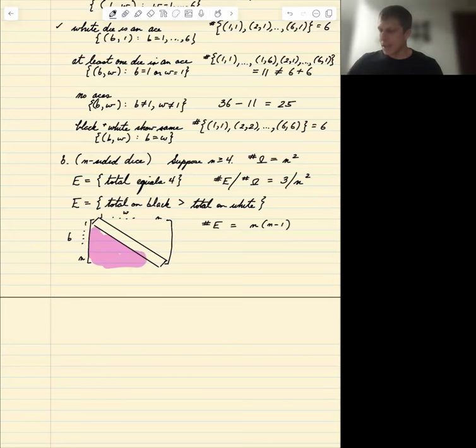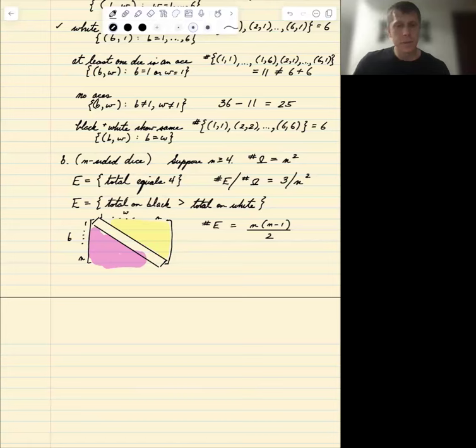Now, in half of those cases, I'm going to be up here, right? Half of those times where they're unequal, the white will be bigger than the black, and half of the times the black will be bigger than the white. So they're exactly symmetric. And so this is the number.